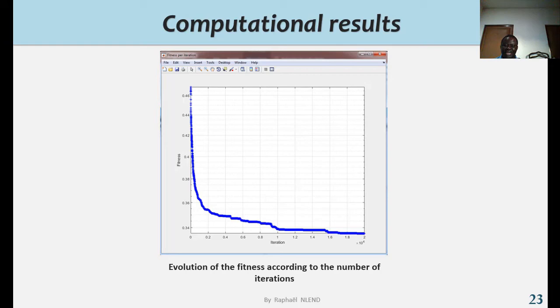Here we have the graphical results presenting the evolution of the fitness according to the number of iterations, which shows the decrease and the convergence of the fitness function in accordance with our objective function.